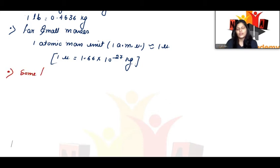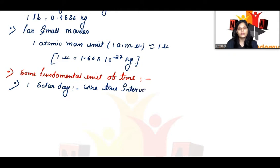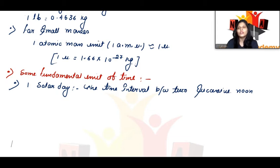Next, some fundamental units of time. First, let's take the solar day. 1 solar day means the time interval between two successive noons. So 1 solar day is equal to 24 hours.